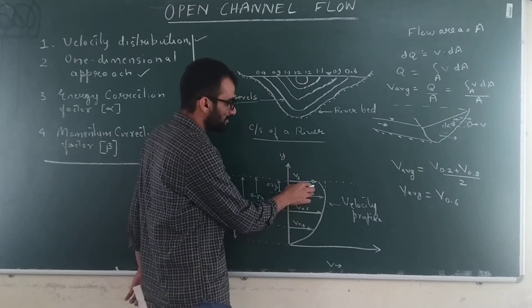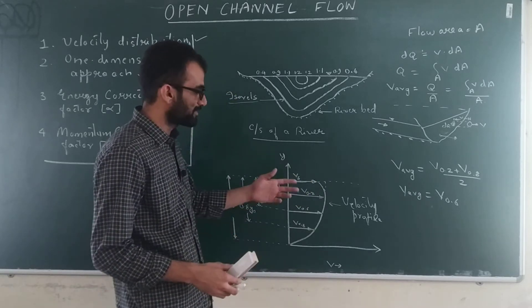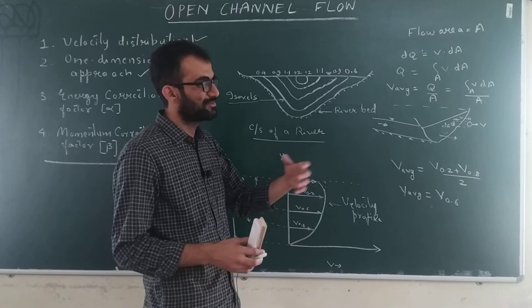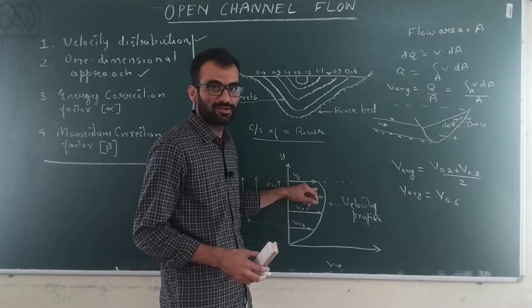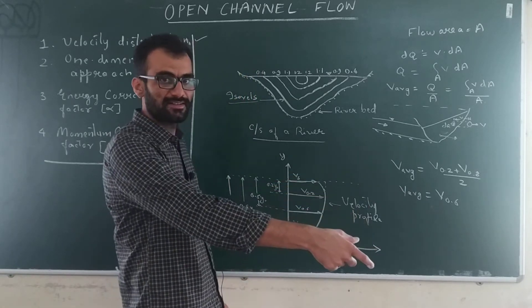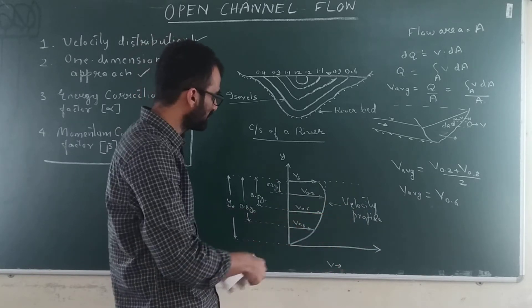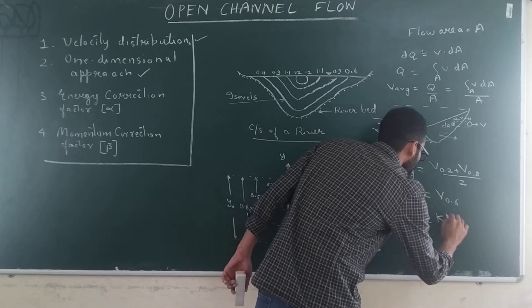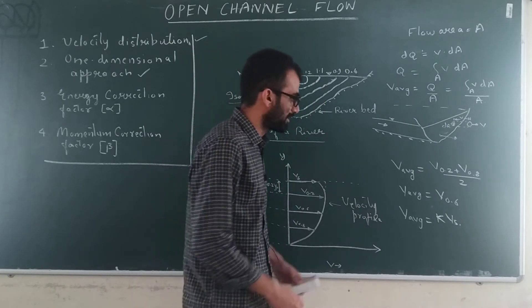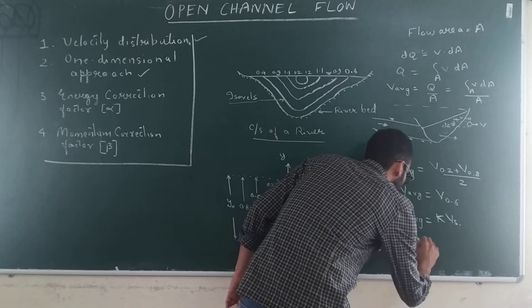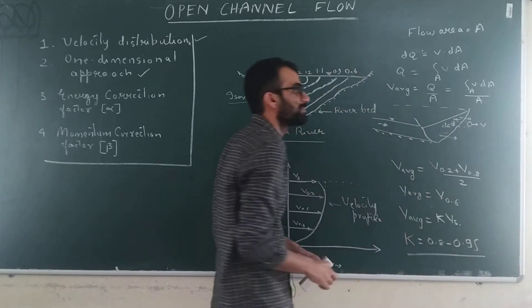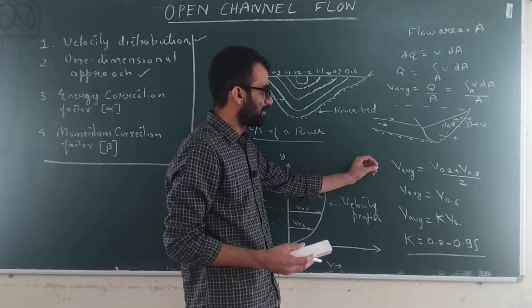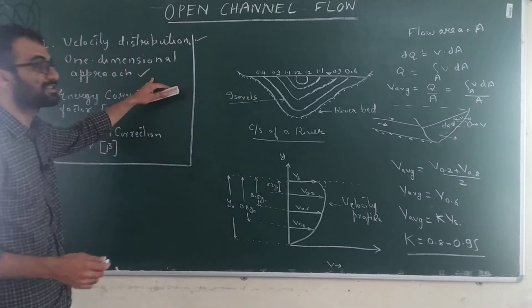If you only have the surface velocity — measured using a radar instrument similar to how traffic police measure vehicle speeds — you can estimate the average velocity as V_avg = k × Vs, where Vs is the surface velocity and k is a constant ranging between 0.8 and 0.95. This is also quite close to the true average velocity.